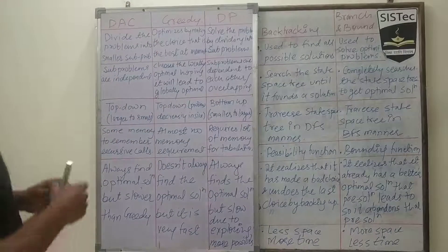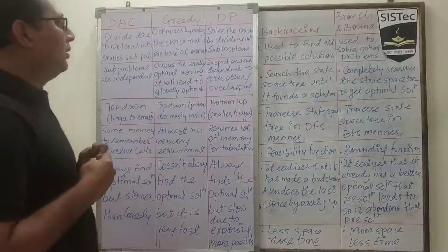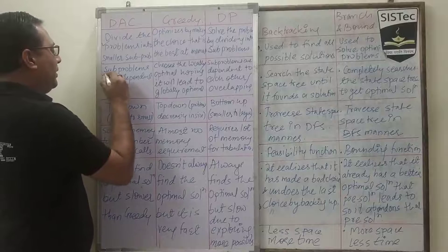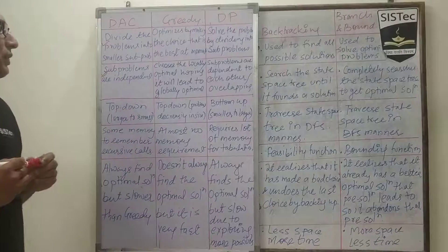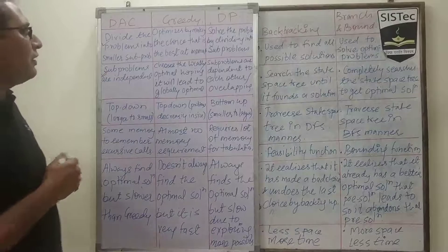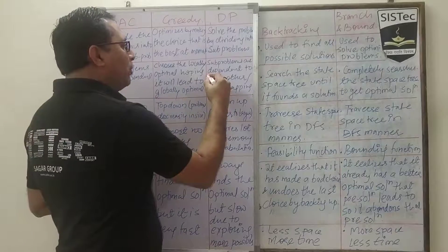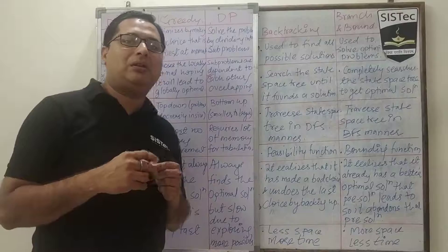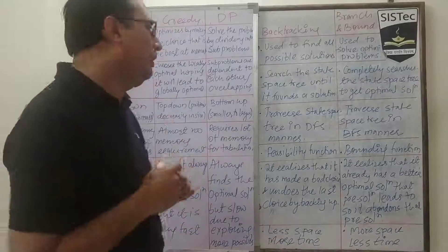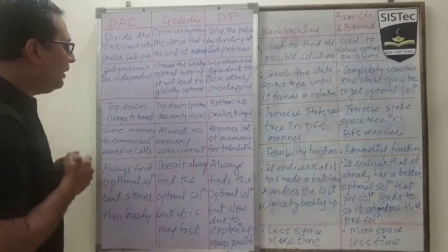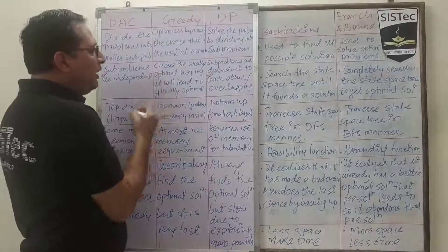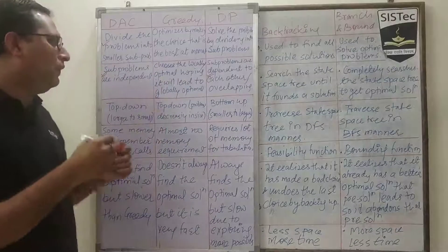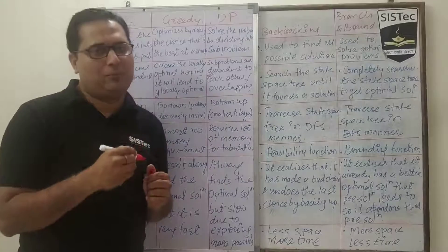Point number two — this is very important. The subproblems are independent in the case of divide and conquer. Whereas in the case of dynamic programming, subproblems are dependent on each other, or we can say they are overlapped. This is a very important point. In the case of greedy, it chooses the locally optimal choice hoping that it will lead to the globally optimal choice.